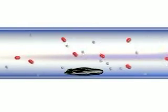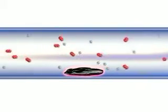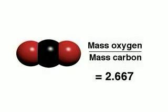When oxygen is present in higher concentrations, the principal product of the oxidation of carbon is carbon dioxide. Analysis of carbon dioxide shows that the mass ratio of oxygen to carbon is 2.667.